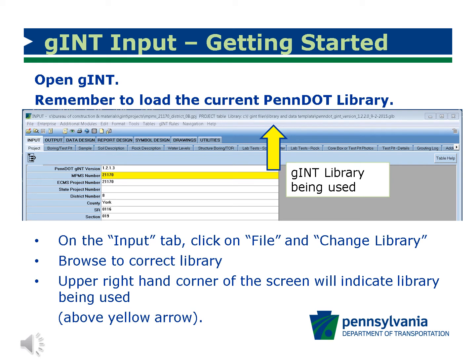After you receive a copy of PennDOT's Gint library and data template, save copies on your computer and remember the location of the files. When you are prompted for the Gint library, browse to the location where the library was previously saved and click on the library file. If the library has been updated since the last use, you will need to change the library to take advantage of the changes to the drop-down menus and reports.